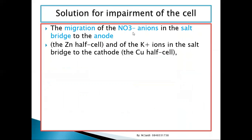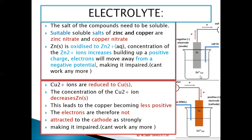The negative anions come from the salt bridge, which is made up of potassium nitrate (KNO₃). The nitrate anions migrate to the anode (zinc side), while the potassium cations migrate to the cathode (copper side). The nitrate anions neutralize the accumulated Zn²⁺ positive charge at the anode, keeping the terminal negative as it should be.